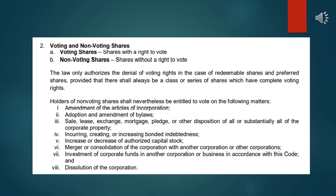The next type of share is voting and non-voting shares. From the word itself, voting shares have the right to vote, and non-voting shares do not. Under the law, it authorizes the denial of voting rights in the case of redeemable shares and preferred shares, provided that there shall always be a class or series of shares which have complete voting rights. So redeemable and preferred shares generally have no voting rights, but this is the general rule — and in every general rule, there is an exception.